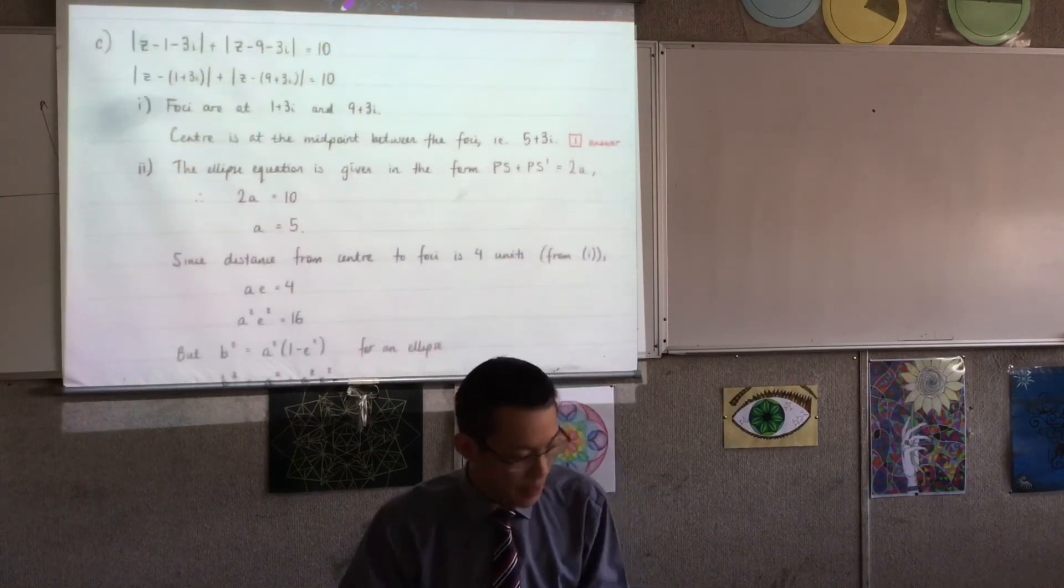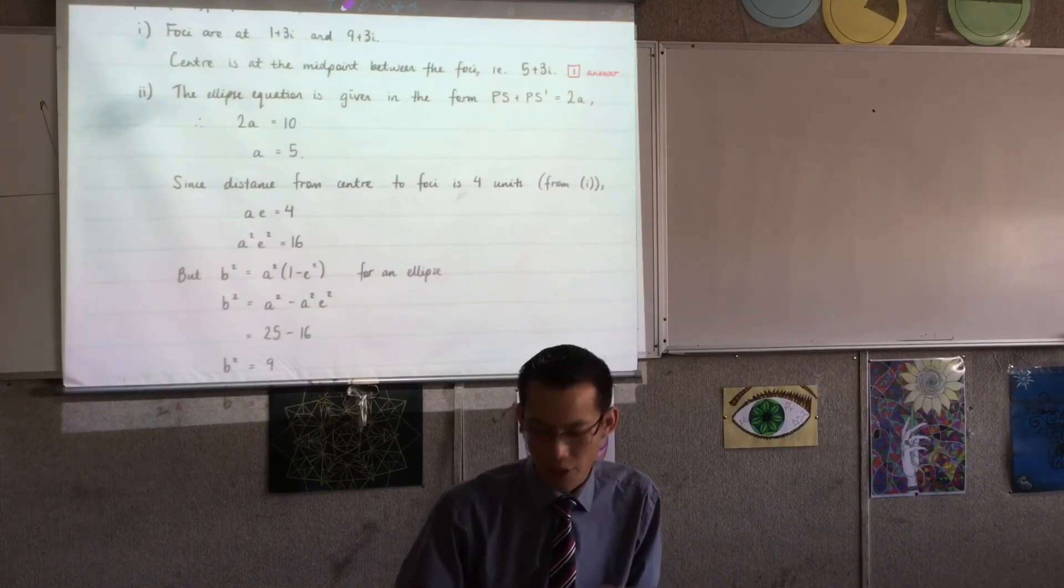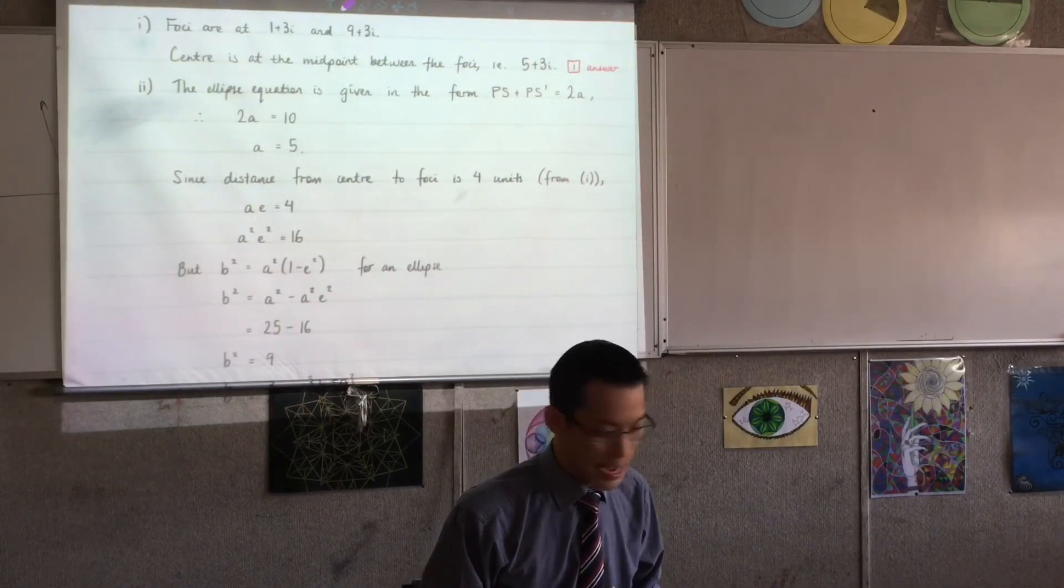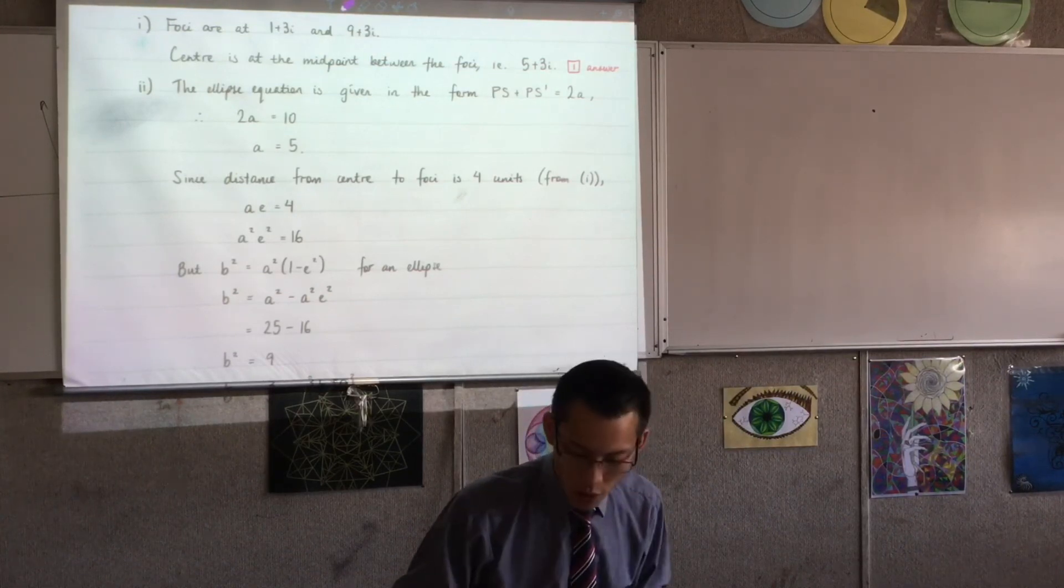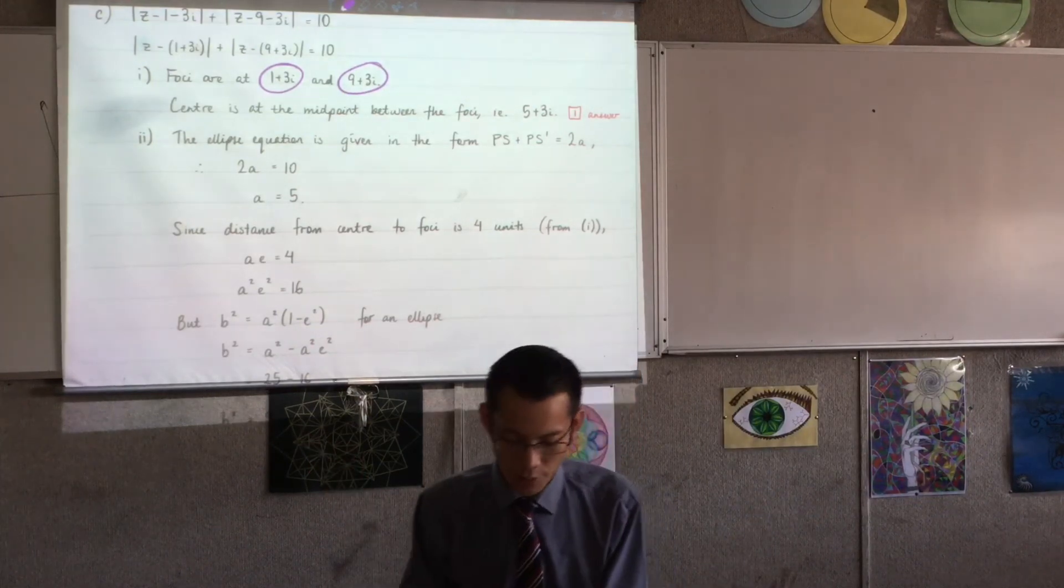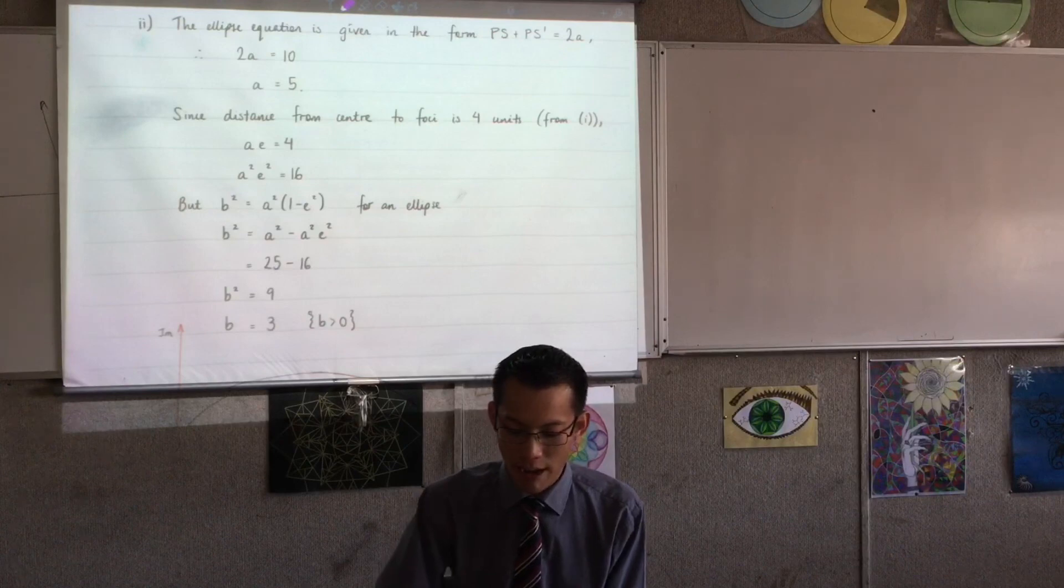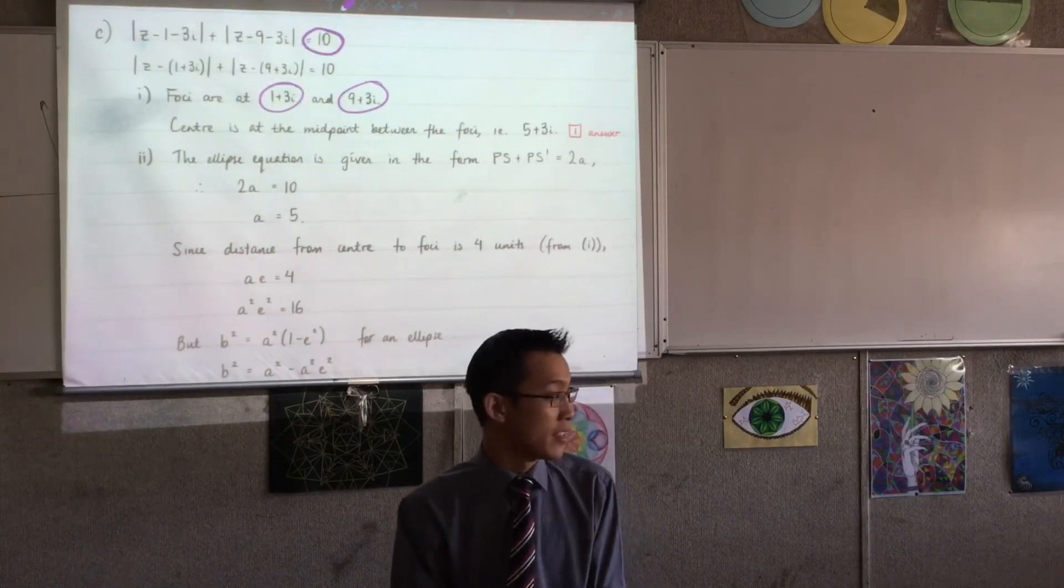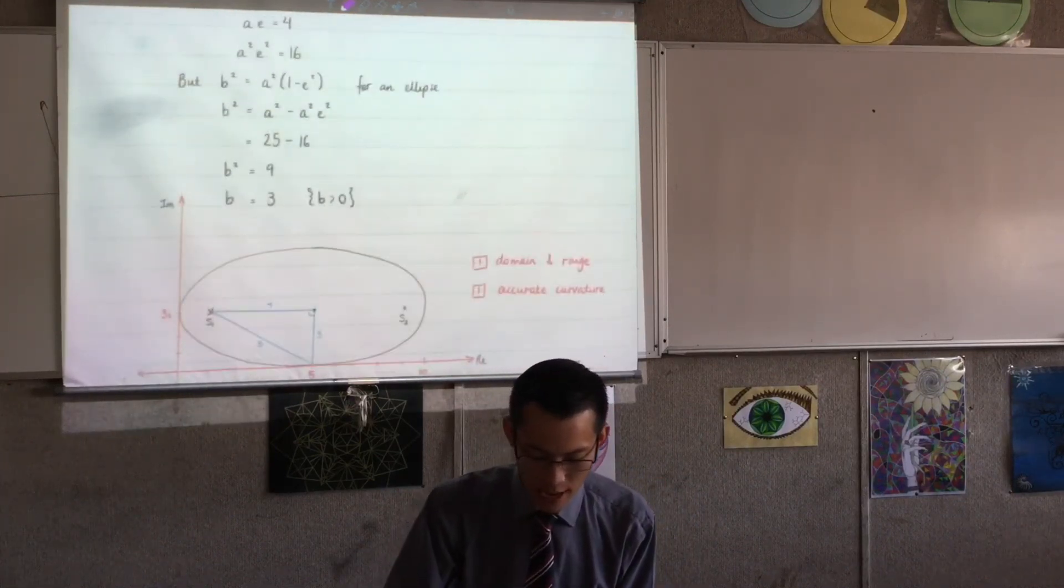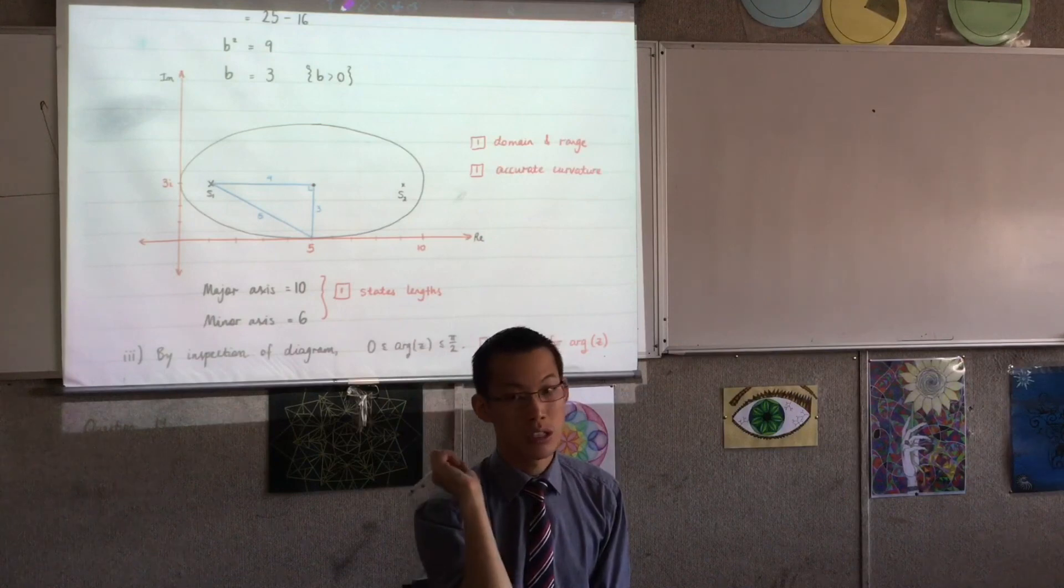Let's move on to part C. The ellipse. This was kind of patchy. Most people, I found, either really got it or really did not understand where to go. The easiest way is to say, look at the form that the equation is given to you in. It's in the form PS plus PS dash. Right? So you've got, you could read off the equation what the two foci are and the foci are useful because the center is the midpoint of those. In order to do part two, you can take advantage of the same fact to work out A and B. Because the equation there tells you what 2A is. PS plus PS dash equals 2A. Once you've got A, working out B is not hard to find because you're going to use the relationship with eccentricity. And once you've got A and B, you've got your major and minor axis and you can put that onto a diagram.